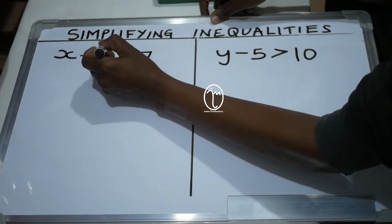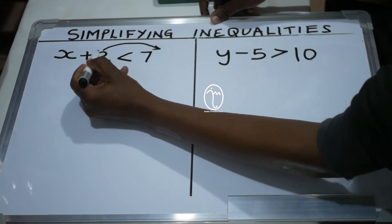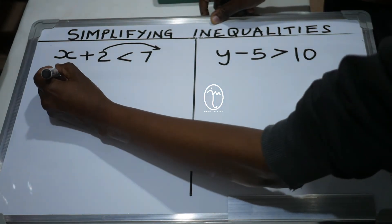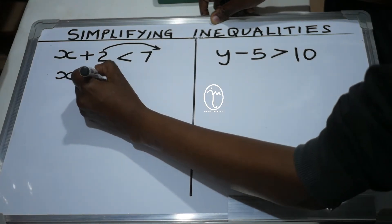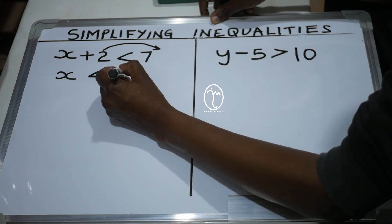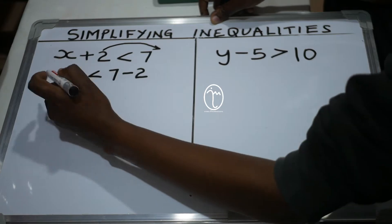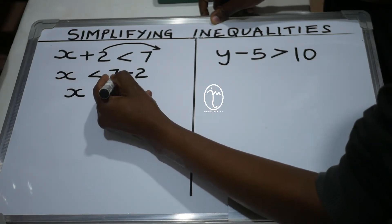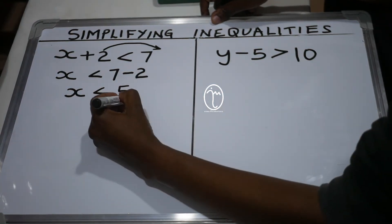So we move 2 to where 7 is, and its sign changes to minus. We have x is less than 7 minus 2, which gives us x is less than 5. That's our answer.